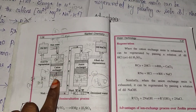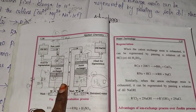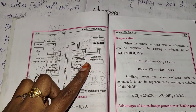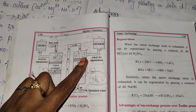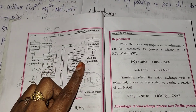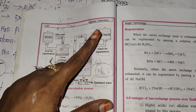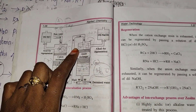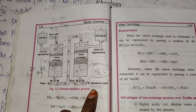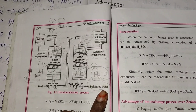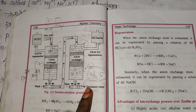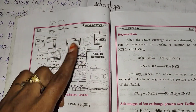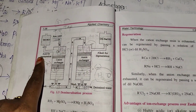In summary, the ion exchange process removes all ions — positive and negative — from raw water. For example, Cl⁻ is converted to OH⁻ in the anion exchanger, and the H⁺ produced in the cation exchanger combines with OH⁻ to form H₂O — deionized water. The cation exchanger is regenerated using dilute HCl, and the anion exchanger is regenerated using dilute NaOH.